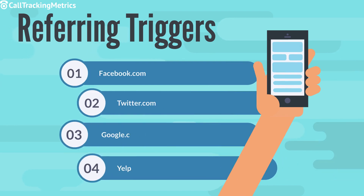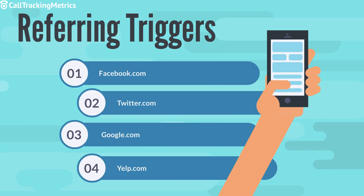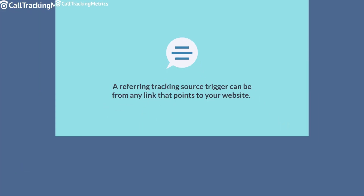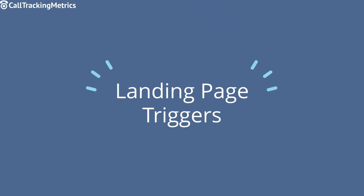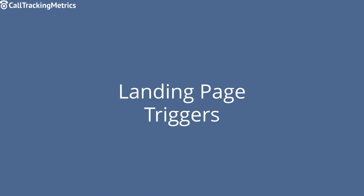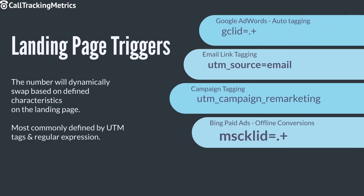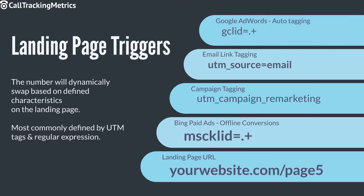Here are some common examples of referring URL triggers. Referring triggers are any site that directs traffic to your site. Landing page triggers — the number will dynamically swap based on defined characteristics on the landing page. Landing page triggers are commonly defined by UTM tags and regular expressions.